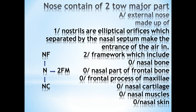The framework of the nose includes the bones, cartilage, muscle, and skin. We have the nasal bones, frontal bones right and left, and the nasal muscles and skin.